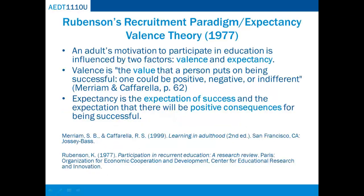Rubenson theorized that an adult's motivation to participate in education is influenced by two factors: valence and expectancy. Valence is the value that a person puts on being successful — one could be positive, negative, or indifferent. Whereas expectancy is the expectation of success and the expectation that there will be positive consequences for being successful. Motivation to participate is derived from both elements of expectancy.